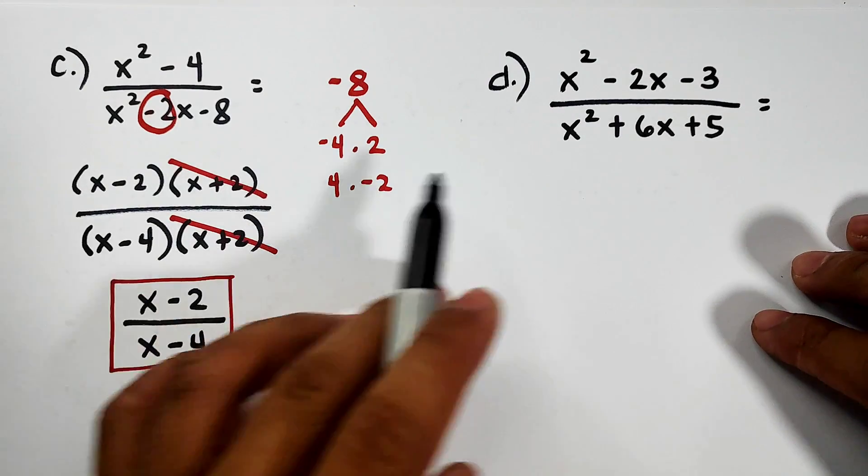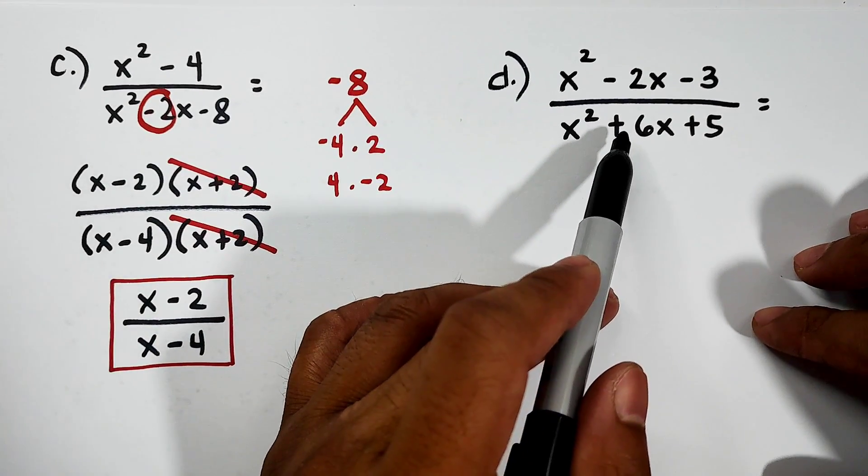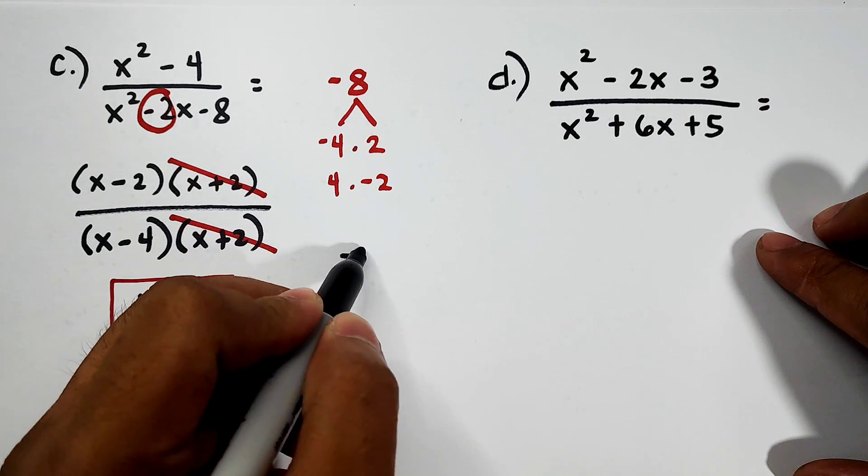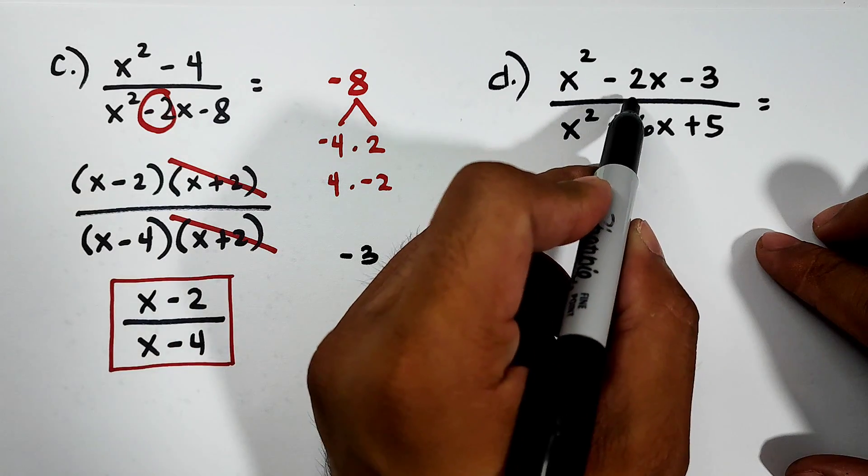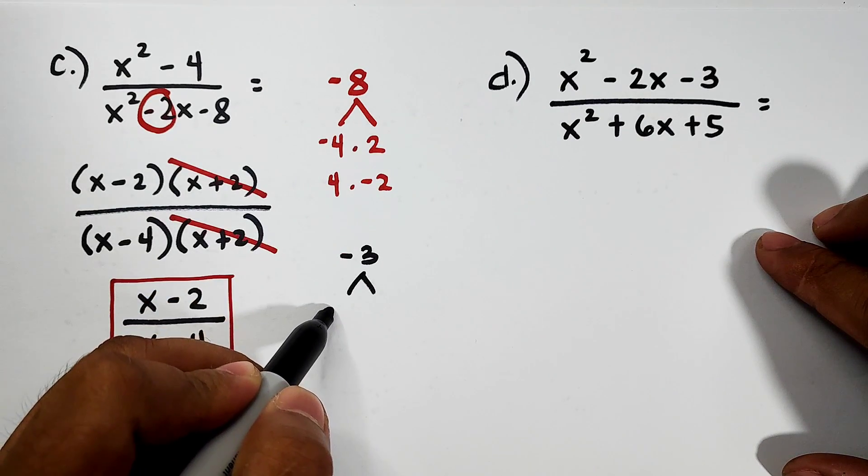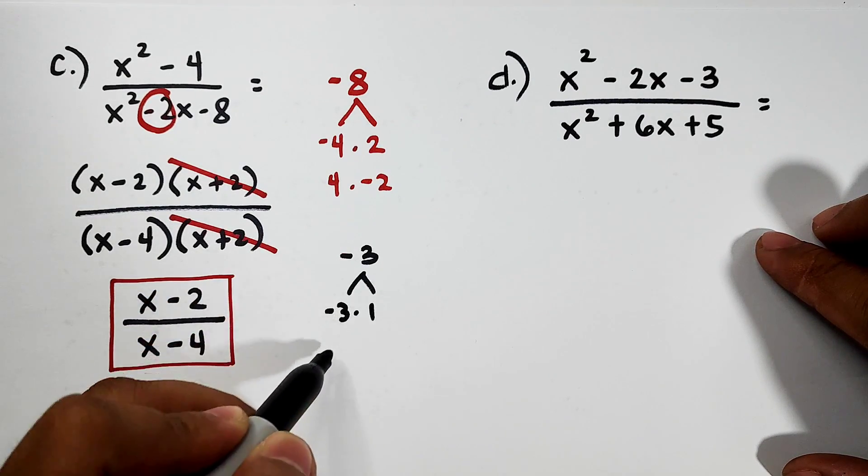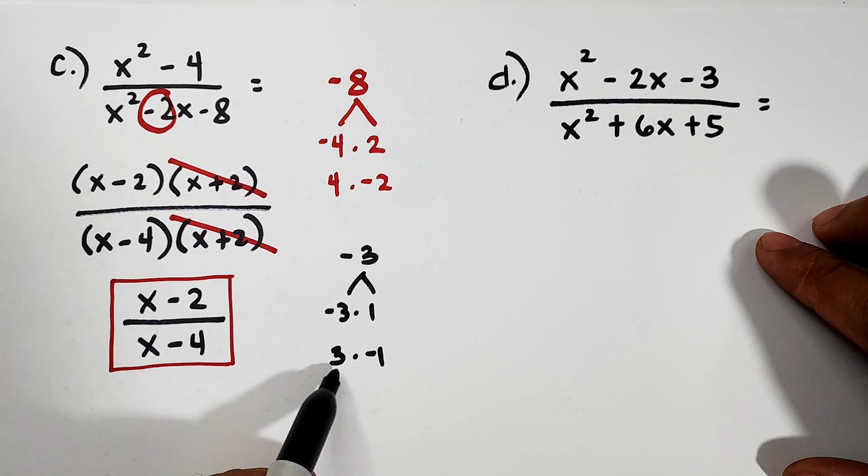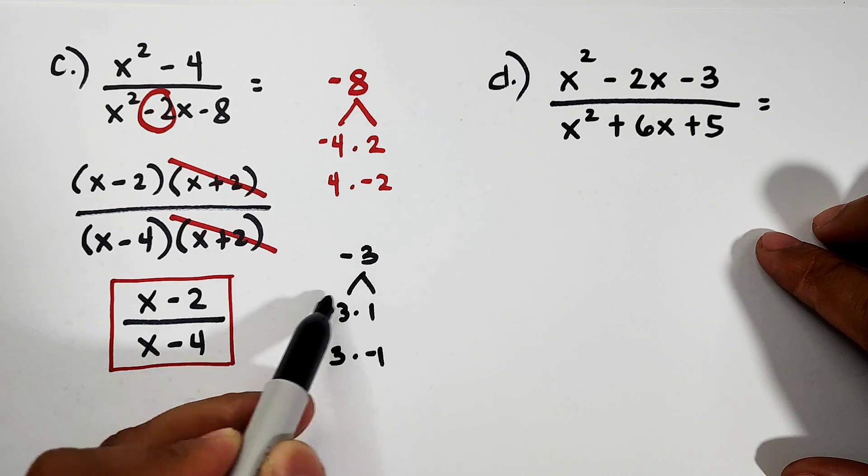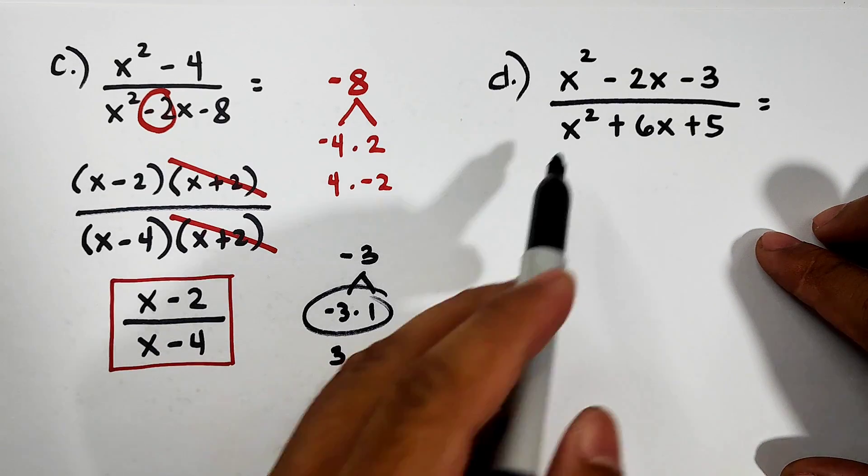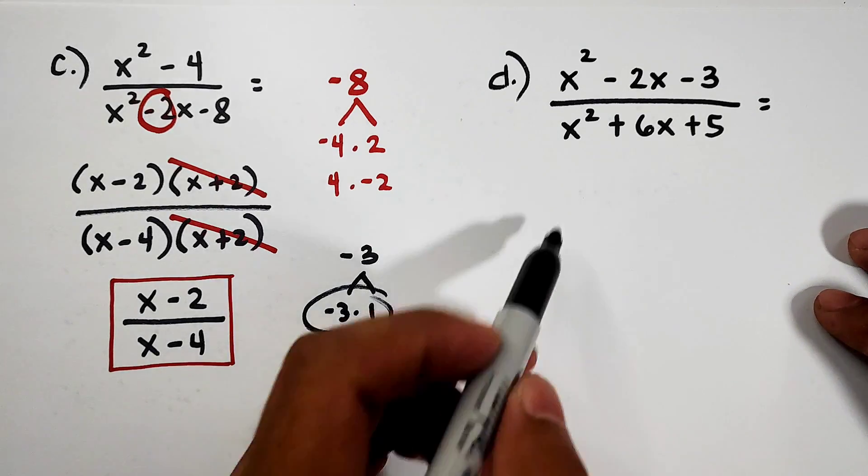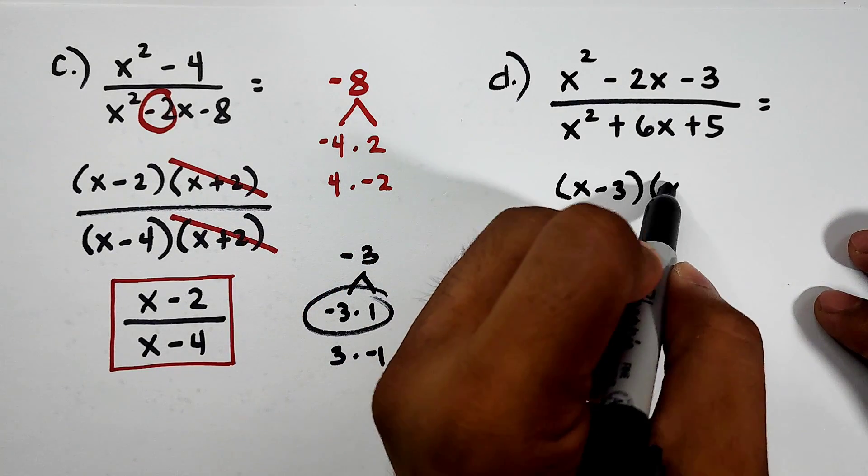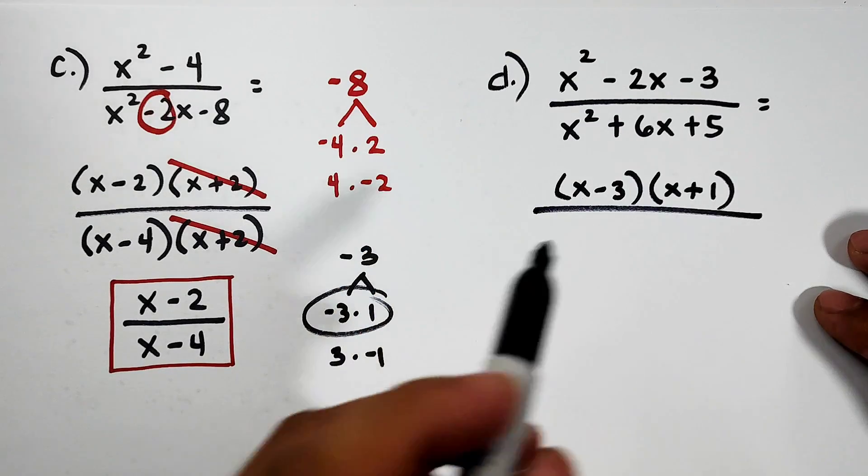Let's move on with letter D. For letter D, trinomial factoring. Factors of negative 3 that will give us negative 2 - negative 3 times 1, or positive 3 times negative 1. When you add these two, it will give you positive 2, so not this. When you add this, it will give you negative 2. So our factors now is (x - 3)(x + 1). Over your denominator.